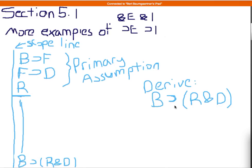We're going to make another assumption. And our assumption is going to be B. So we're going to assume the antecedent, and we're going to try to derive R and D. So you'll notice already that by assuming B, we can actually get F out up here. By assuming B, we can get F, because we already have that as our assumption.